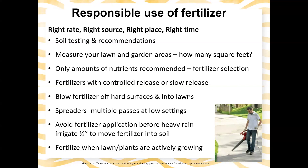When you receive those recommendations, you want to measure your lawn and garden areas because the recommendations come in pounds per thousand square feet. You need to know how many square feet you are applying to, and you want to only apply the amount of nutrients recommended. In garden sites established for a while, nitrogen is often the only thing required — and sometimes not even that, if there's sufficient organic matter in the soil to cycle and release nitrogen for plants.